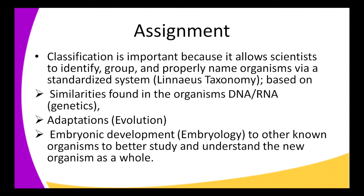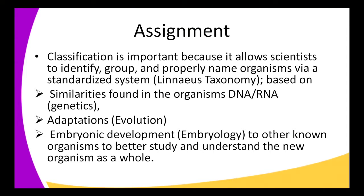The second question: define binomial nomenclature and state why it is important. Binomial nomenclature is a naming system whereby an organism is given two names — one being a genus and another being a species. It is important because it allows scientists to identify, group, and properly name organisms using a standardized system, which is the Linnaean taxonomy. Organisms are classified based on similarities in DNA and RNA from genetics, their adaptation through evolution, and their embryonic development.